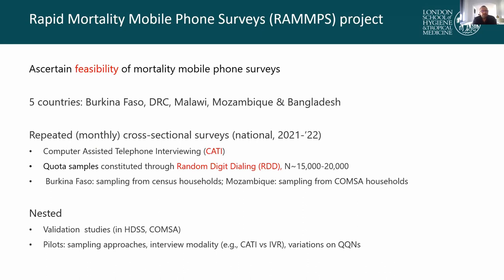In some countries we will use a slightly different approach for sampling. In Burkina Faso, we will collaborate closely with the Institute of National Statistics to sample from census households, because the last census conducted in 2019 and early 2020 collected the telephone numbers of household heads. In Mozambique, we will leverage another nationwide mortality surveillance platform called COMSA and use that as a sampling frame in addition to random digit dialing.